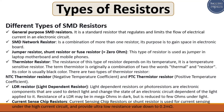Fourth is the thermistor resistor. The resistance of this type depends on temperature — it is a temperature-sensitive resistor. The term 'thermistor' is originally a combination of two words: thermal and resistor. Its color is usually black. There are two types: NTC thermistor (negative temperature coefficient) and PTC thermistor (positive temperature coefficient).